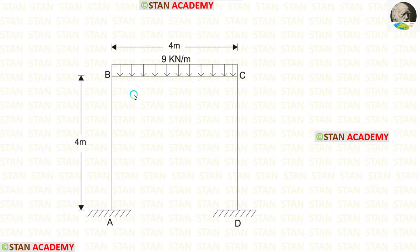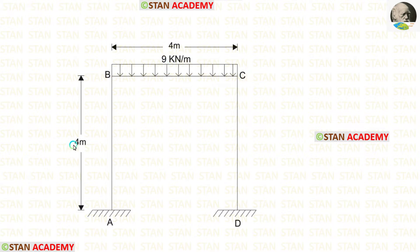In the columns, there are no loads. In the beam BC, there is a uniformly distributed load of 9 kN per meter, acting for the full span. The height of the columns is 4 meters and the length of the beam is also 4 meters. This frame is a non-sway type frame because we have symmetrical loading and symmetrical dimensions.